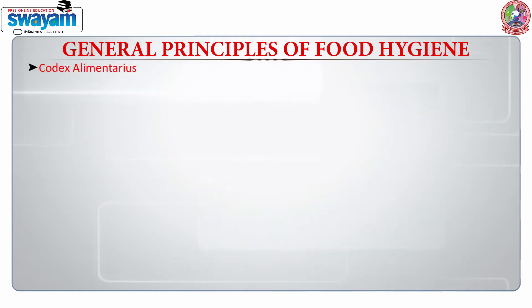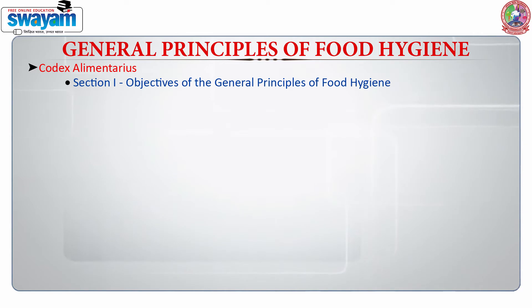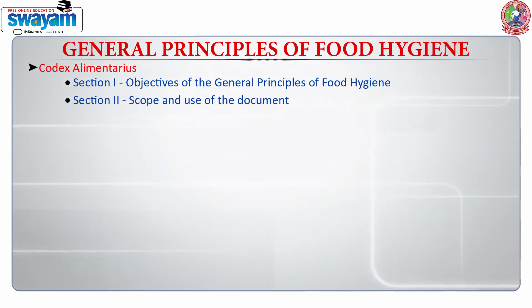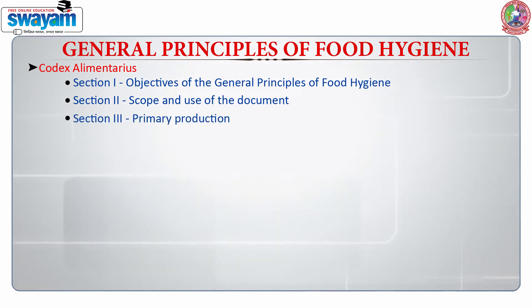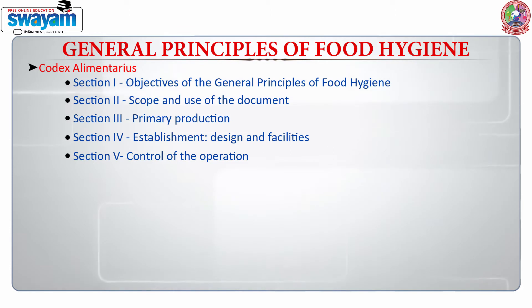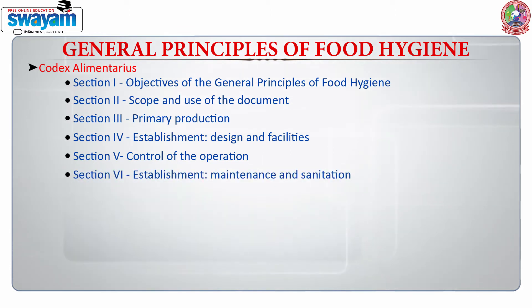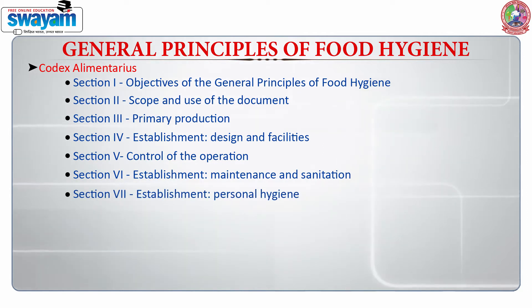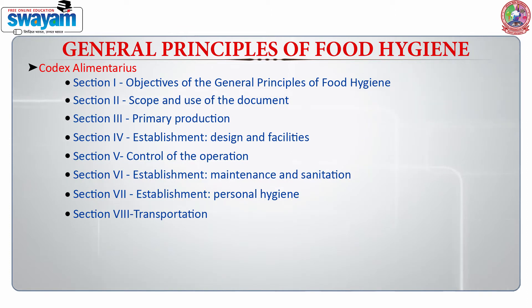The principles of food hygiene have been given by the Codex Alimentarius. The guidelines are divided into various sections: the objectives of the principles, also known as GHPs — good hygienic principles — the scope and use of the document, primary production, the establishment design and facilities, control of operations taking place in food premises, establishment maintenance and sanitation, and personal hygiene, which is very critical because food handlers act as a source of contamination. There is also a section on transportation, to ensure food does not get contaminated before it reaches the consumer.